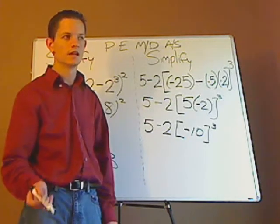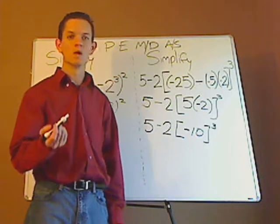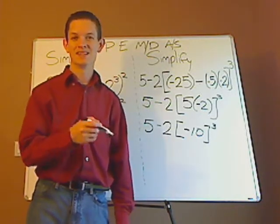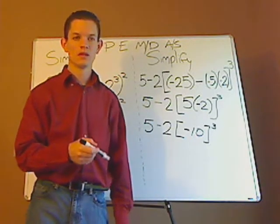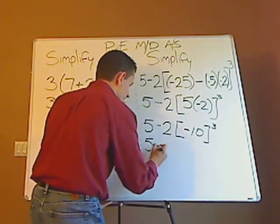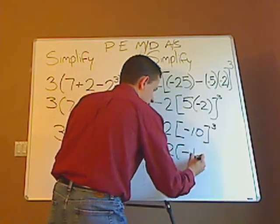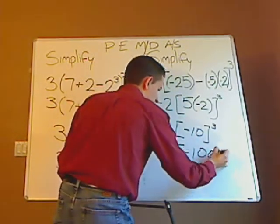Negative 10 times negative 10 is 100, positive 100. And what's positive 100 times a negative 10? Yes, negative 1000. So that's 5 minus 2 times negative 1000.